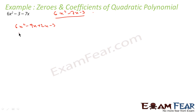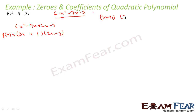Factorizing by grouping: 3x is common in the first two terms and 1 is common in the last two, giving (3x + 1)(2x − 3). The zeros are the values of x for which (3x + 1)(2x − 3) = 0. So x = −1/3 or x = 3/2.